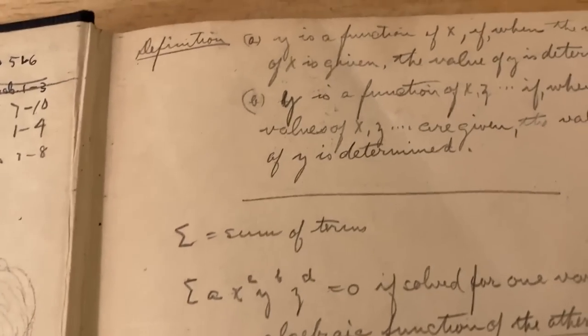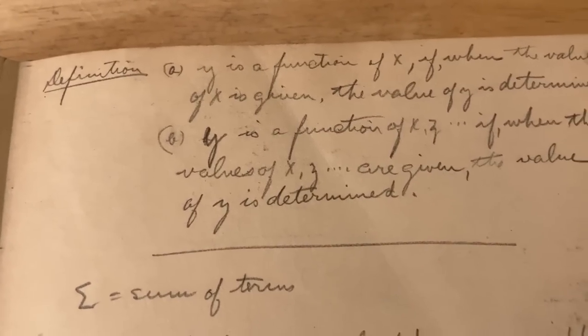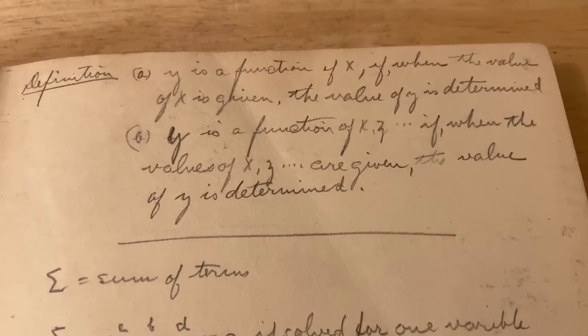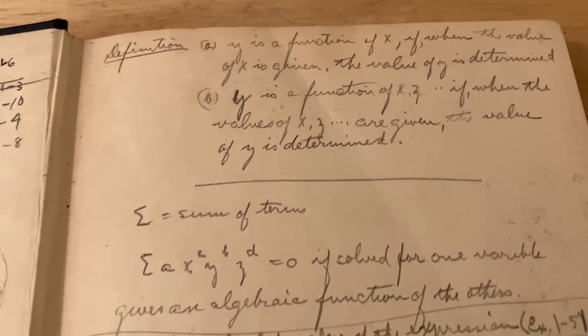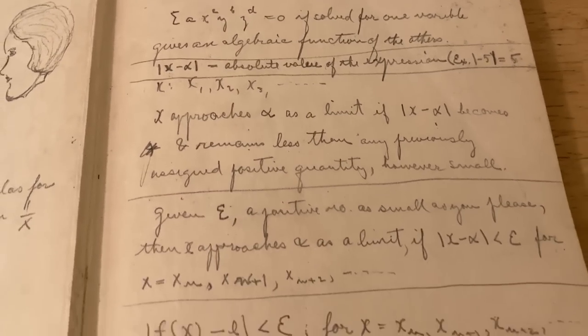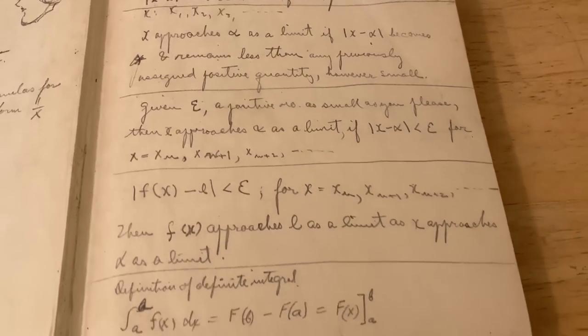What's this over here? Definition: Y is a function of X. Cool. If when the value of X is given, the value of Y is determined. Interesting. Nice cursive handwriting. Really awesome.